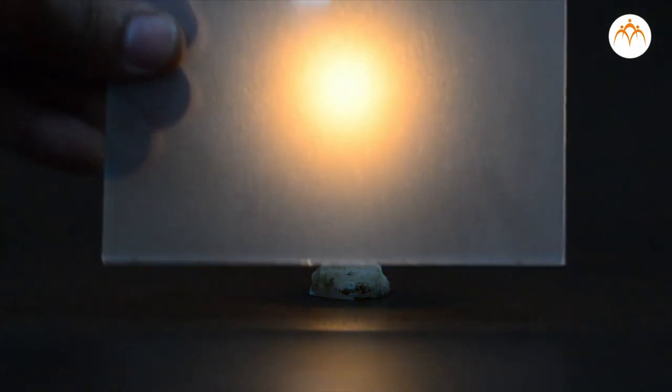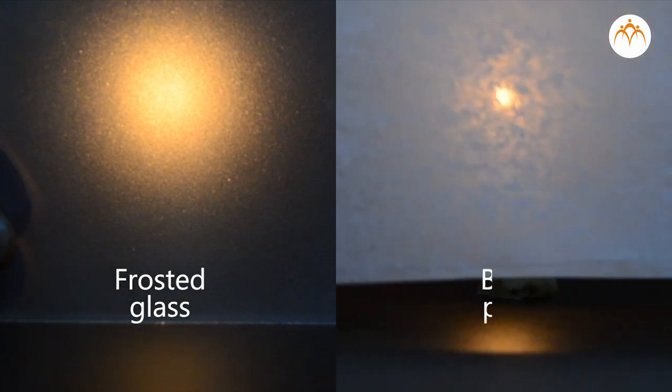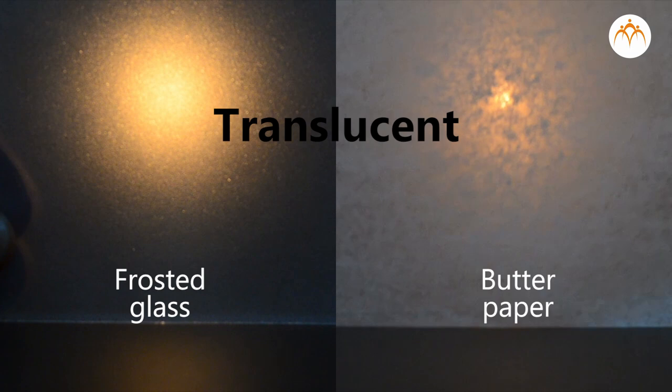Let me place this frosted glass in front of the candle. I can see the candle, but not very clearly. Same is true with this butter paper. These are called translucent objects. A translucent object lets light pass through, but objects on the other side can't be seen clearly.